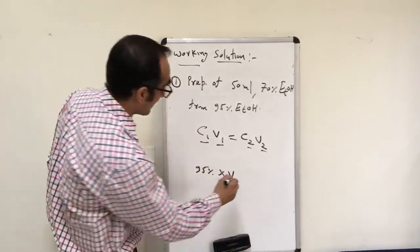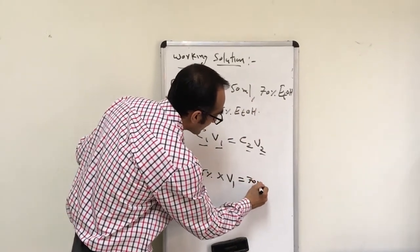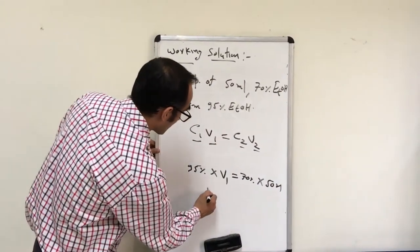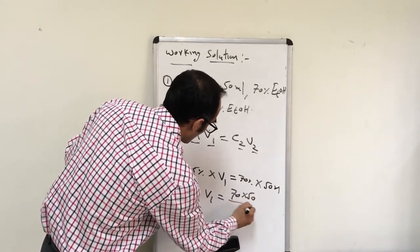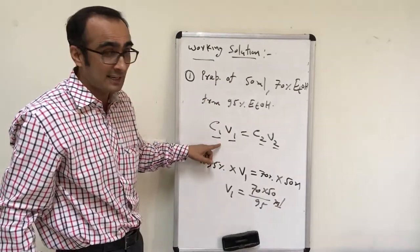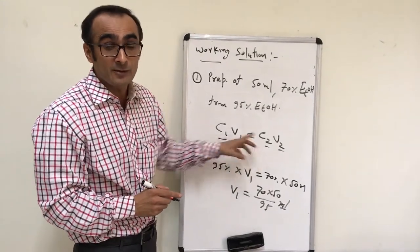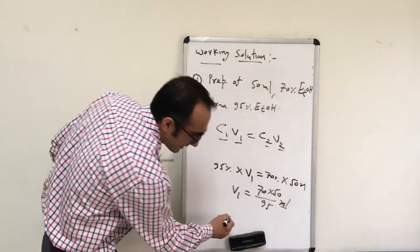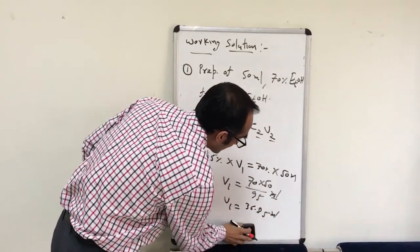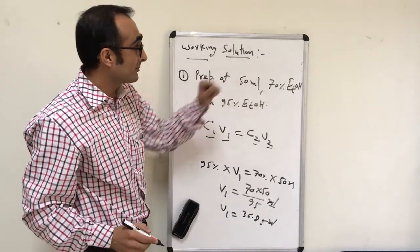The final working solution has a concentration of 70% and a volume of 50 ml. V1 can be calculated from this equation: V1 = (70 × 50) / 95 ml. The important thing to remember is that units must be consistent on both sides. If concentration is given in percent, both concentrations must be in percent; if volume is in ml, it must be ml on both sides. So V1 works out to 36.85 ml.